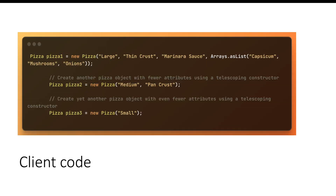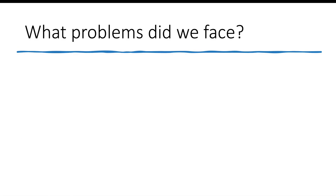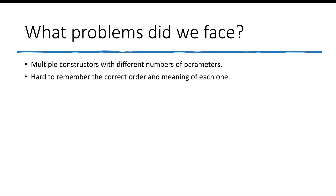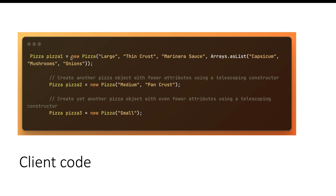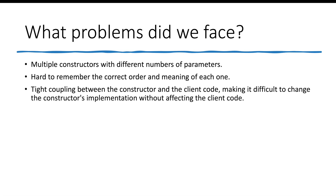Now if you see the client code — the main method where the actual objects are being created — there are three pizza objects being created. Let's talk about the problems we face. Firstly, there are multiple constructors with varying numbers of parameters, and it is hard to remember the order. In the client code, if I'm creating a pizza object, I have to put the size first, then the crust, then the sauce — if I interchange any parameters, errors will come. Thirdly, there is tight coupling between the client code and the constructor: if tomorrow I change or add a new constructor or instance variable, the client code also has to be modified, making the code very rigid.